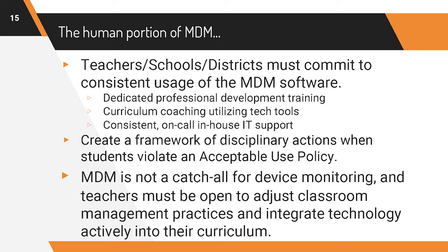Creating the framework for what happens after a student is caught making poor choices is also part of MDM's human component. Is there a restorative action? Does the MDM need to be adjusted? MDM is not a catch-all — you can't immediately act on every flag without investigation. When I was checking for suspicious usage, I found a student looking up explosions in the Middle East. I checked their schedule in PowerSchool — the kid was in journalism. Another student was looking at lots of Pokemon images — they were in art. There is a human aspect: the system catches things, but then you cross-check what class the student is in right now.